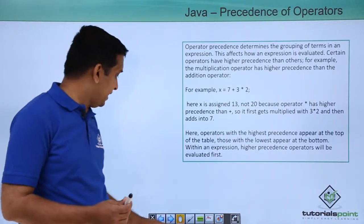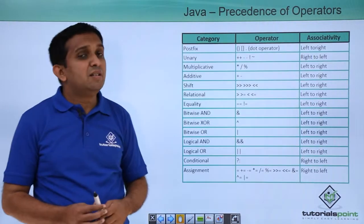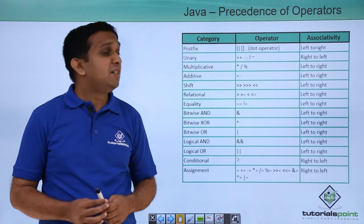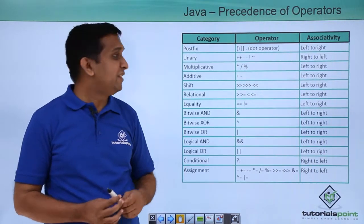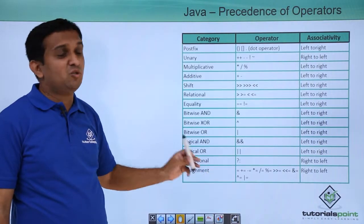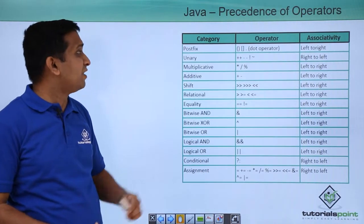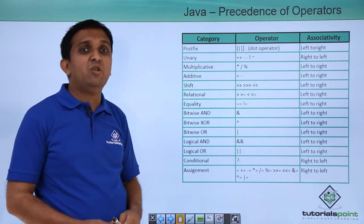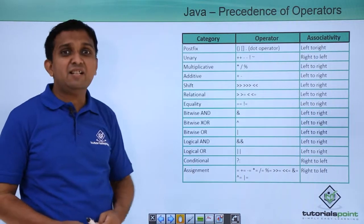Now for other operators, a table is shown. If you go through this table from top to bottom, the precedence of operators is decreasing. Highest precedence operators are written in the first row and lowest precedence operators are written in the last row.